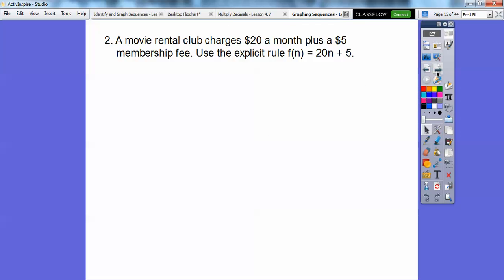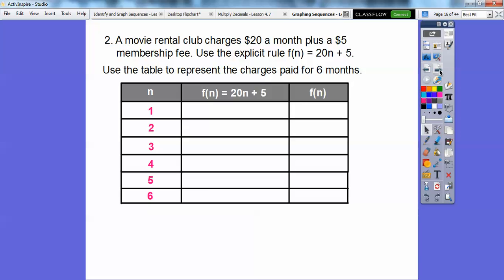Here's another one. A movie rental club charges $20 a month plus $5 membership fee. So here's our function. We'll go ahead and build a table right here. And we're going to represent the charges paid for 6 months. So we're going to plug in 1, 2, 3, 4, 5, 6 for our n.